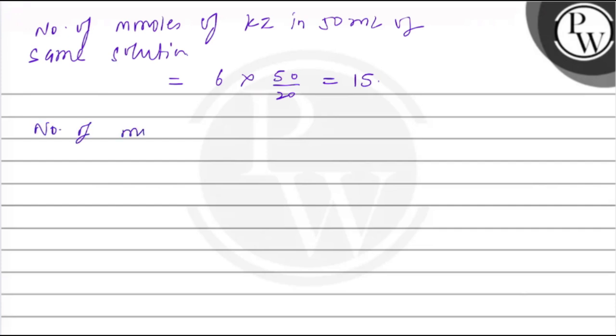Now we will calculate number of millimoles of KI used with 50 ml of KIO3 solution. This will be 1/10 multiplied by 50, which comes out to be 5.